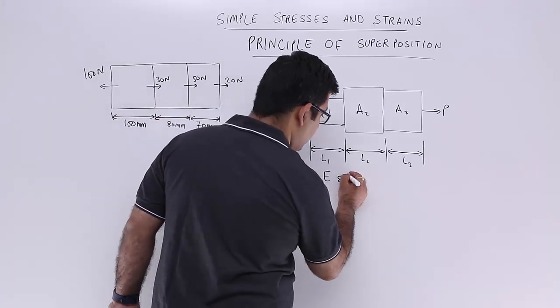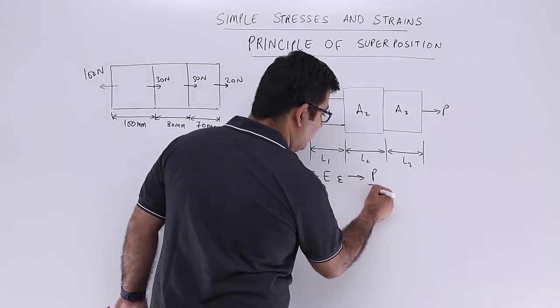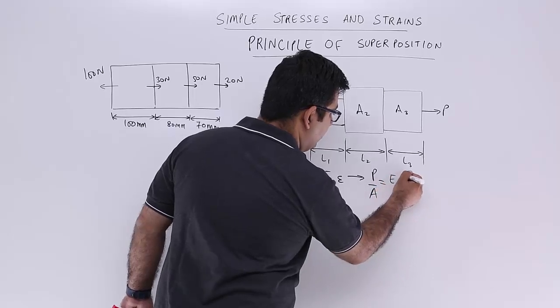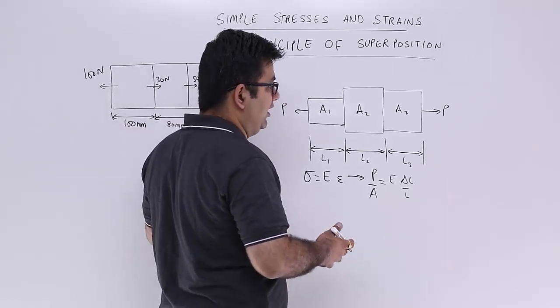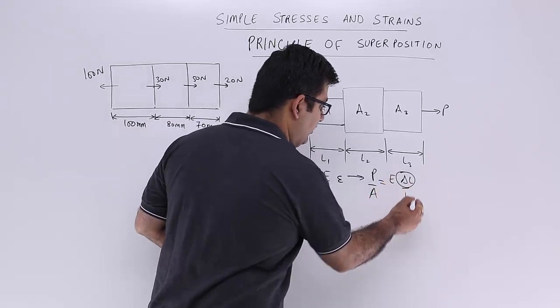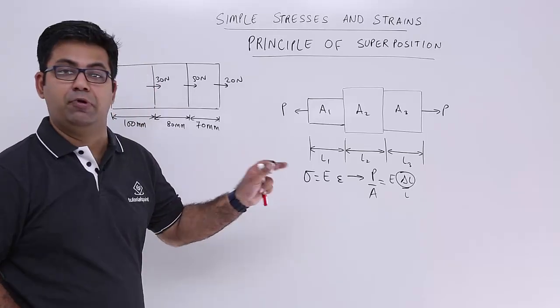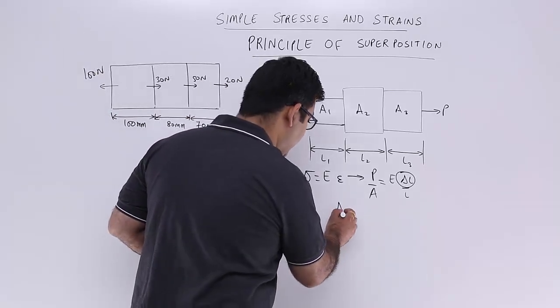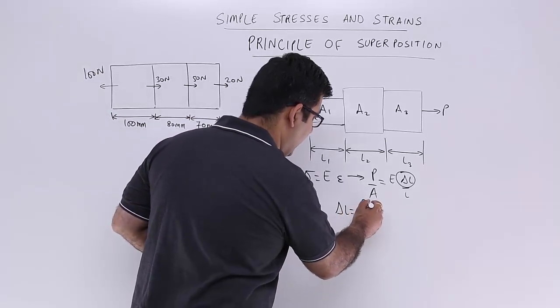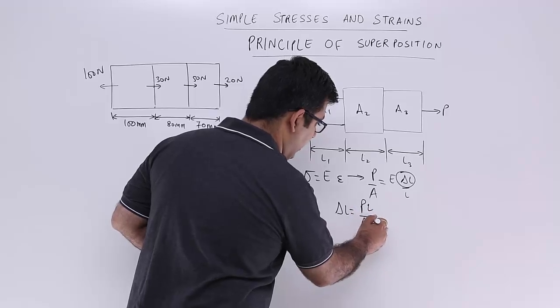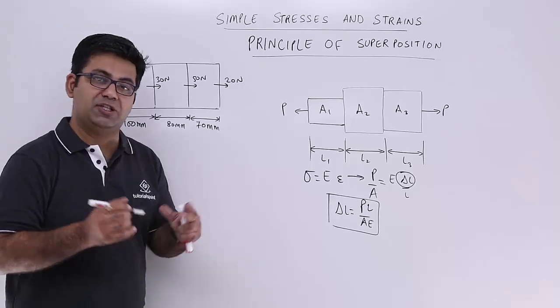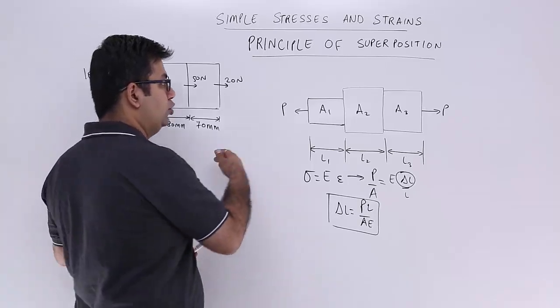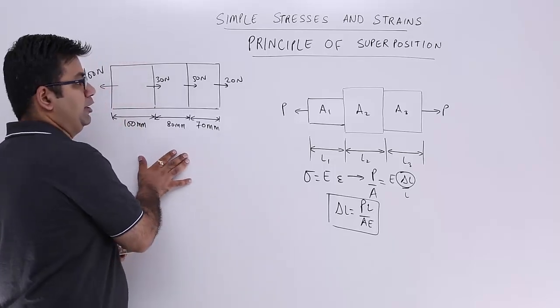Now sigma we know is P by A and epsilon is delta L by L. We are most generally asked to find out the value of delta L in these kind of problems. So delta L can be written as PL upon AE. This is the mathematical formula to find out the elongation or the contraction due to such an arrangement.